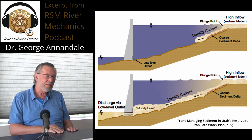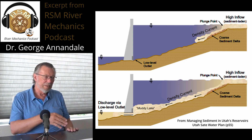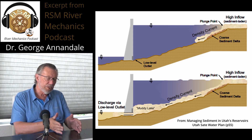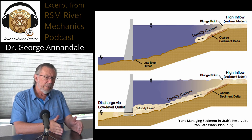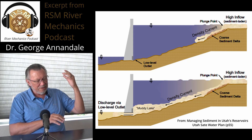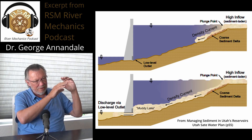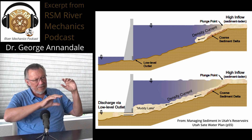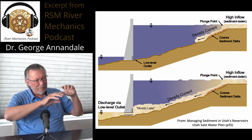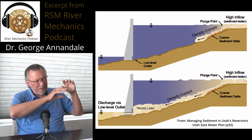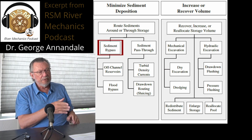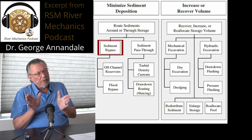Those density currents travel very far. Like in the case of Xialongdi, it's a hundred kilometers that it travels. So you have this density current containing the sediment, and if you have a low-level outlet at the dam, you try to get that current to go through the dam.